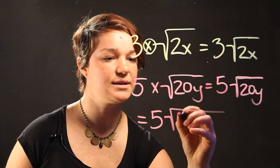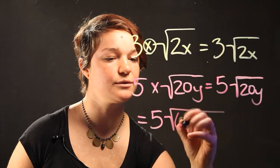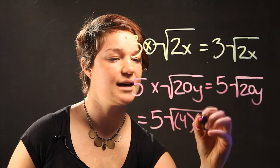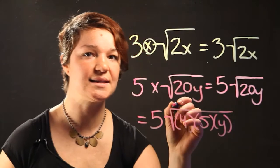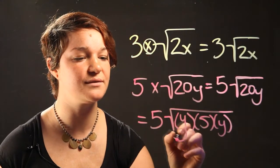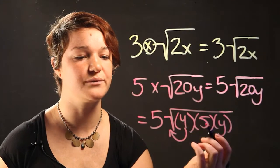You know that the 20y is equal to 4 times 5 times y. Because this is a square root sign, you can take the 4 out. The square root of 4 is 2.